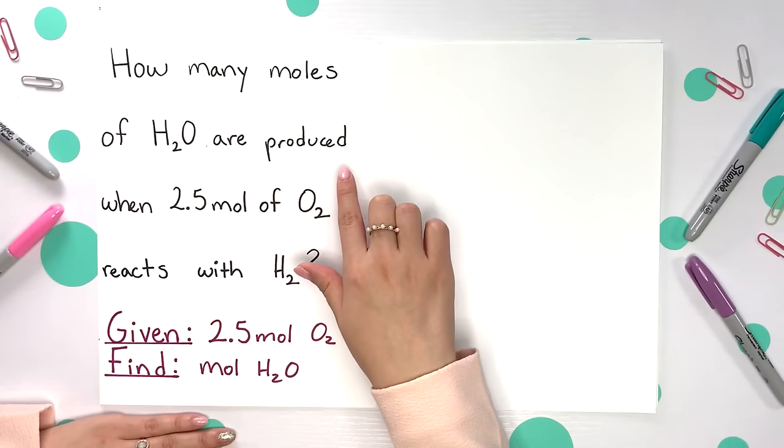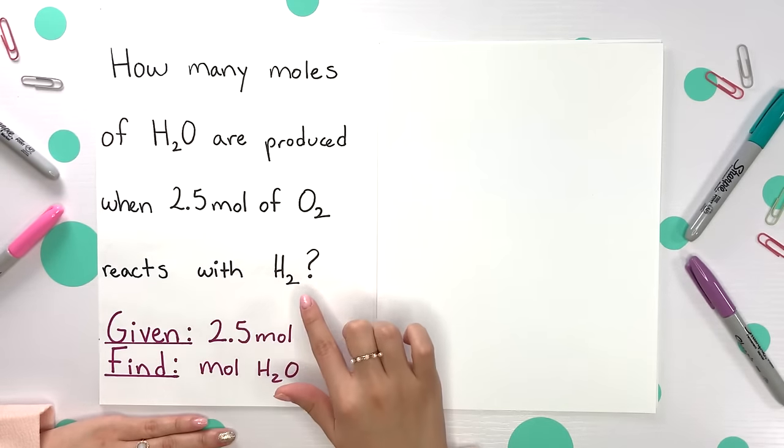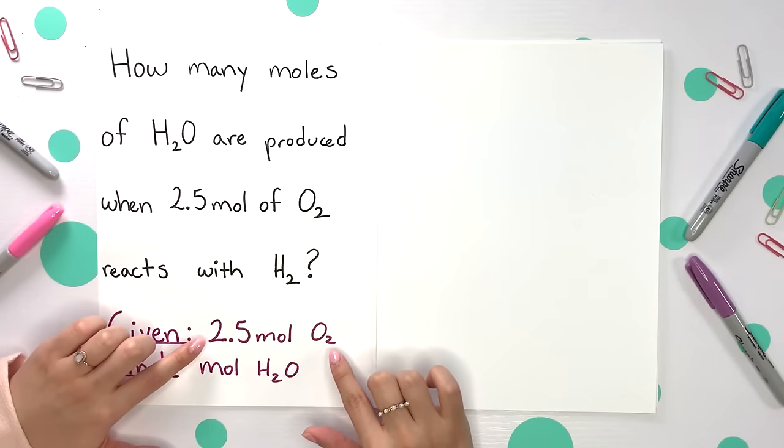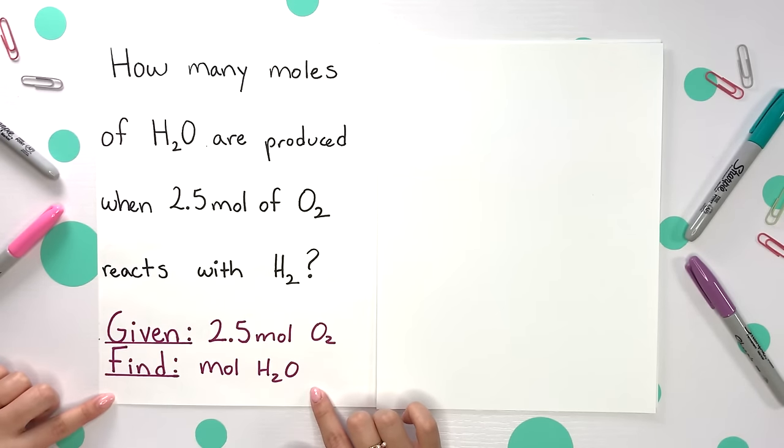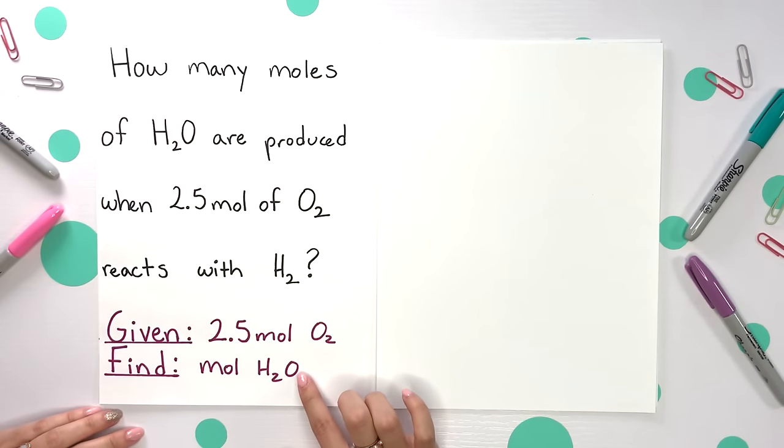Let's try some. How many moles of H2O are produced when 2.5 moles of O2 reacts with H2? We're given 2.5 moles of O2 and you're finding moles of H2O. Notice we're going from O2 to H2O, so we're changing our compound. We have to use a mole ratio.